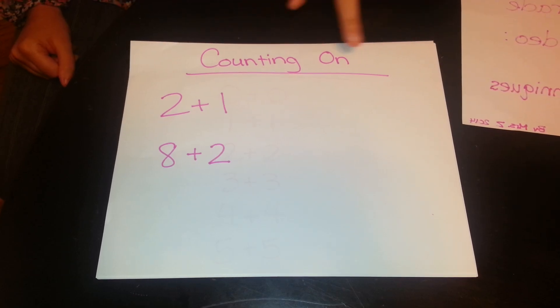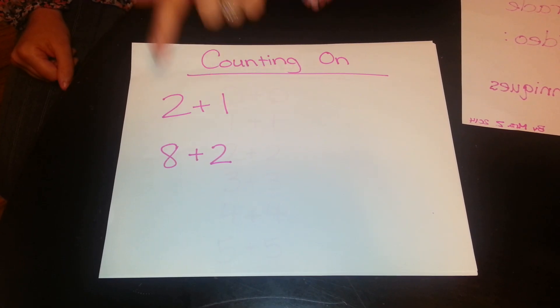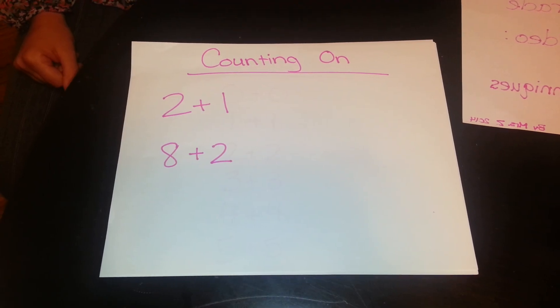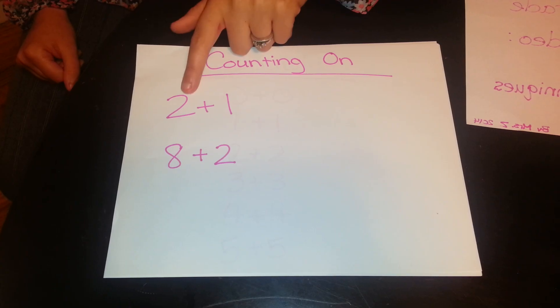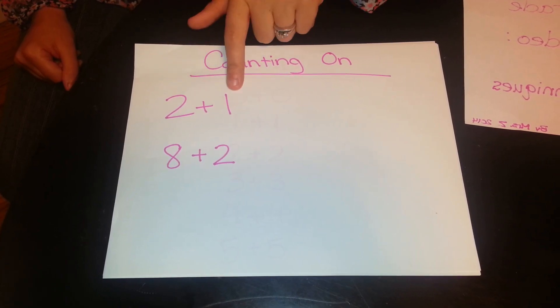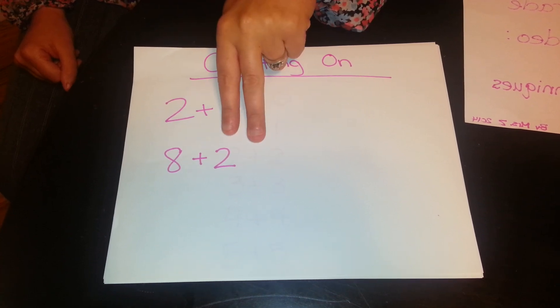One of our strategies is counting on. So for those plus 1 and plus 2 facts. For solving a problem like 2 plus 1, if they don't already know the answer they can start at 2 and count one more. 2, 3. For a plus 2, the same thing. 8, 9, 10. Counting on.